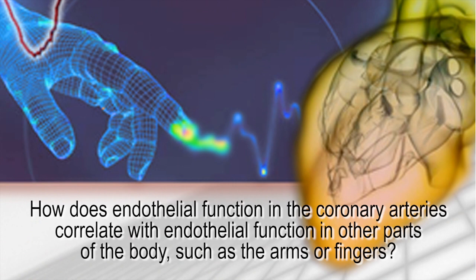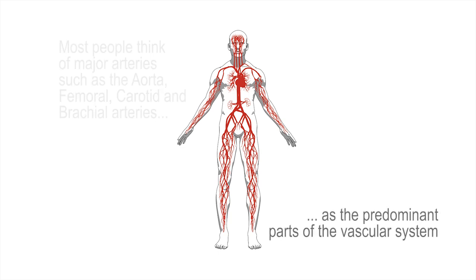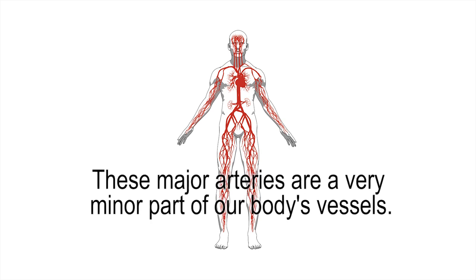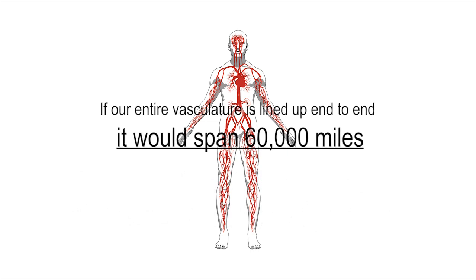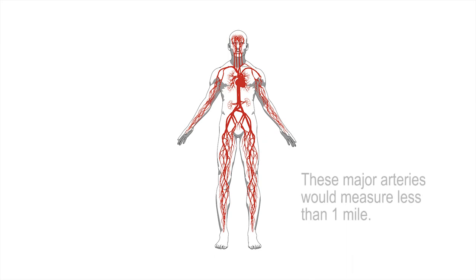How does endothelial function in the coronary arteries correlate with endothelial function in other parts of the body, such as the arms or fingers? Most people think of major arteries such as the aorta, femoral, carotid, and brachial arteries as the predominant parts of the vascular system. But in reality, these major arteries are a very minor part of our body's vessels. If our entire vasculature were lined up end-to-end, it would measure approximately 60,000 miles, and the major arteries would measure less than one mile — only a tiny fraction.